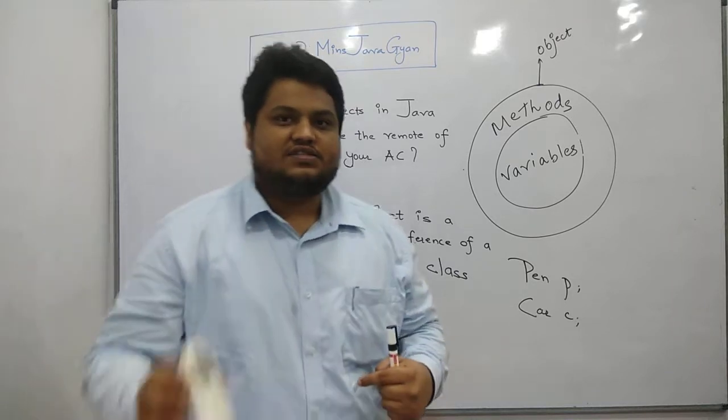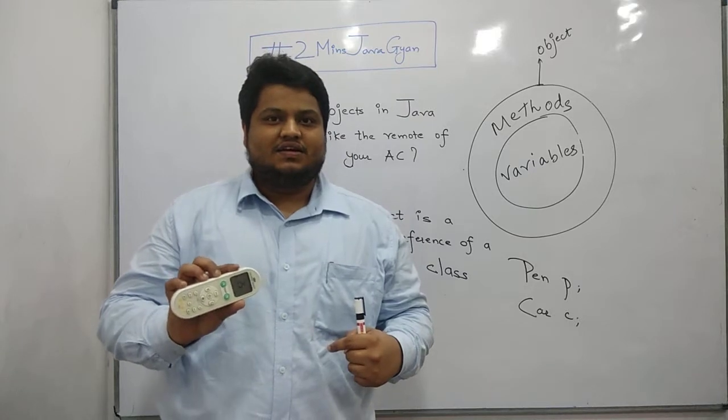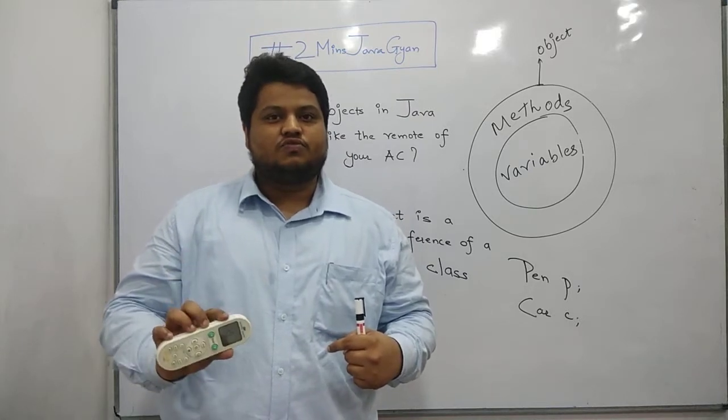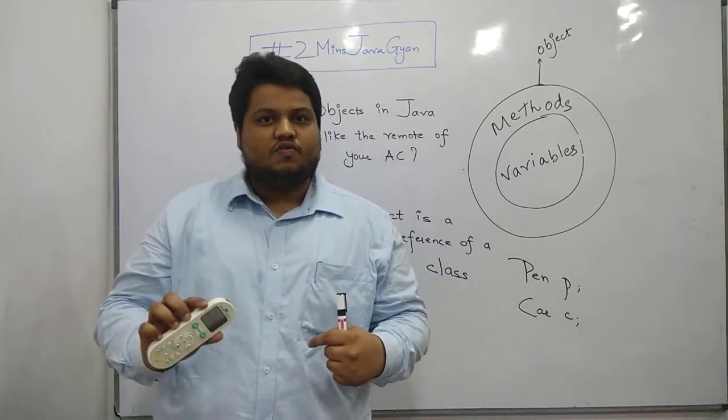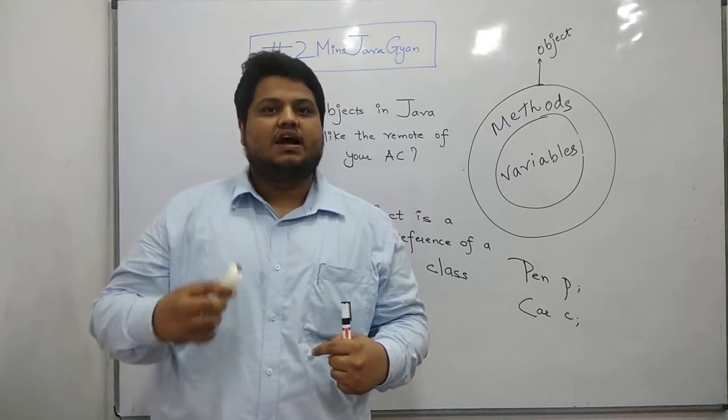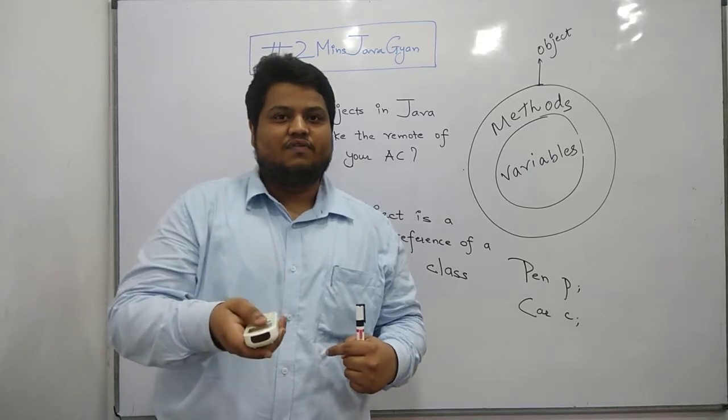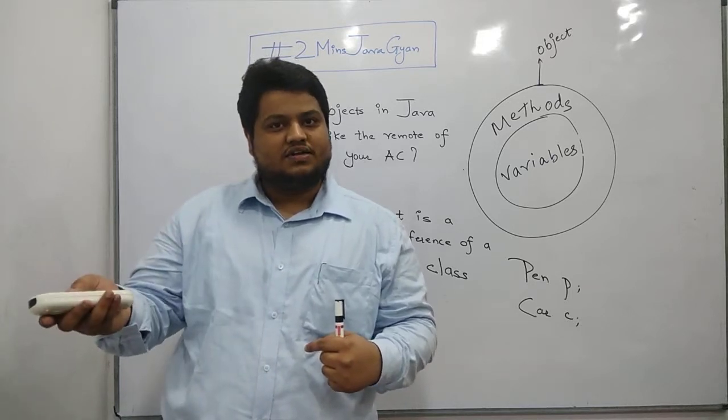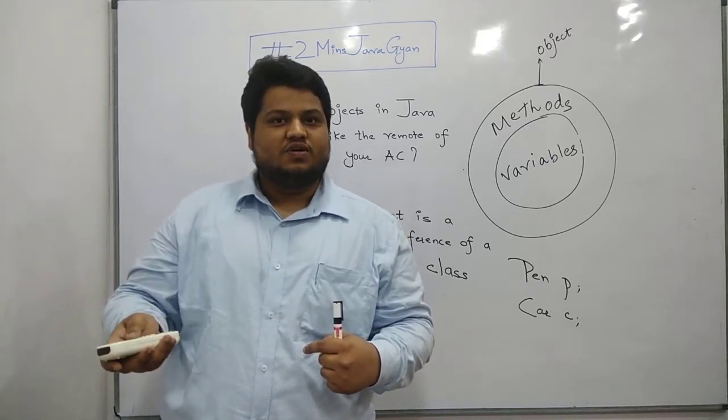For example, I have this remote of my AC. Now, I can use this remote to lower down the temperature of my AC, make the temperature higher, shut down my AC, apply the timer. But the moment I put it on this mobile phone or on the TV, it is not going to work. Why?